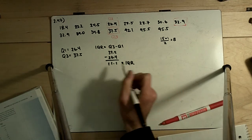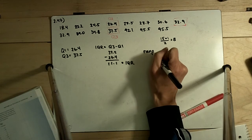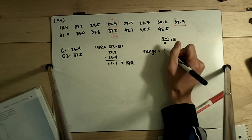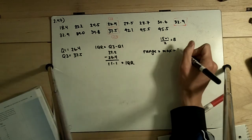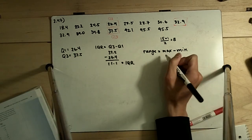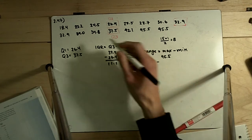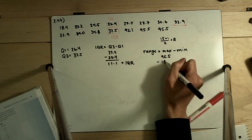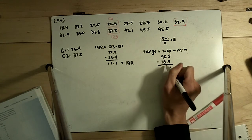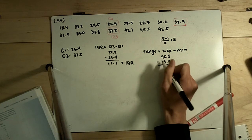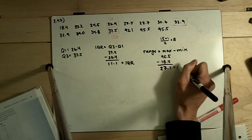Part B asks us to find the range. The range is the largest number, or the max, minus the smallest number, or the min. In this case, we have 45.5 minus 18.4, which gives us 27.1 as our range.